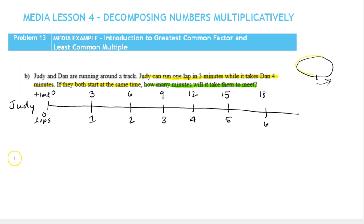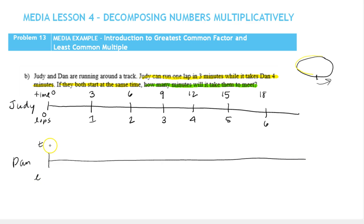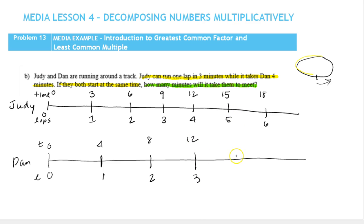Now let's look at Dan. This is time and this is laps, and he also starts at zero. It takes him four minutes to run a lap. He finishes his first lap at four minutes, his second lap at eight minutes, his third lap at twelve minutes, his fourth lap at sixteen minutes, and his fifth lap at twenty minutes.